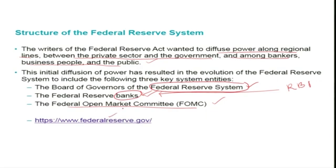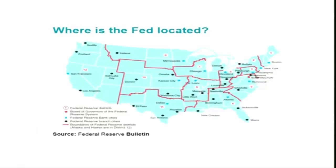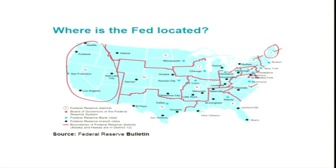I would suggest visiting the website of the Federal Reserve System, where you will find detailed information about how it evolved, its functions, structure, and interventions. There are 12 Federal Reserve Banks located across the country, organized into Federal Reserve Districts. This map shows that there are 12 Federal Reserve Banks spread across the country — for example, one area falls under the 12th regional Federal Reserve Bank, and another area under Federal Reserve Bank 1.